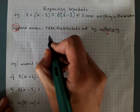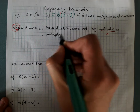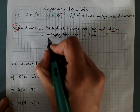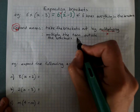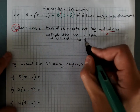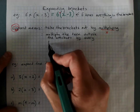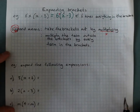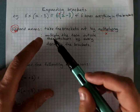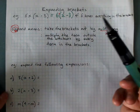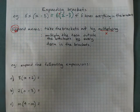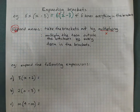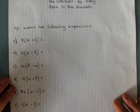What we need to do is multiply the term outside the brackets by every term in the brackets. That means the multiplication has already happened, so we don't need the brackets anymore. Let's look at how we do it and keep our steps there.